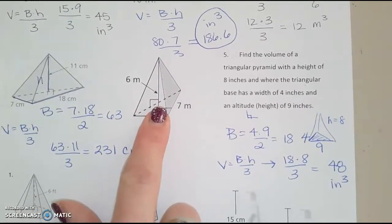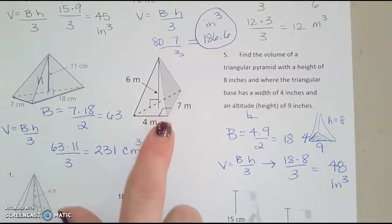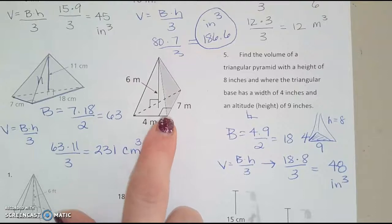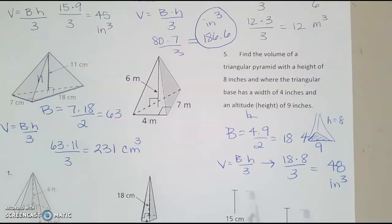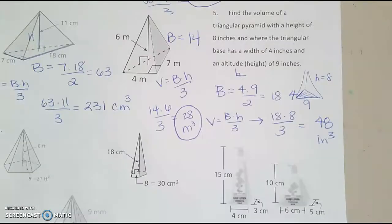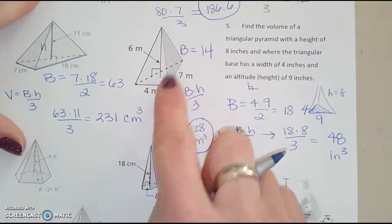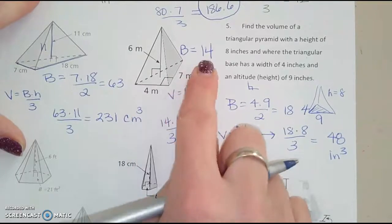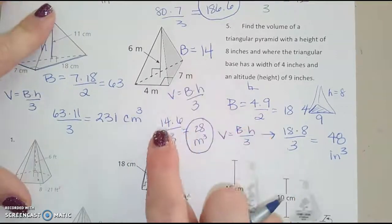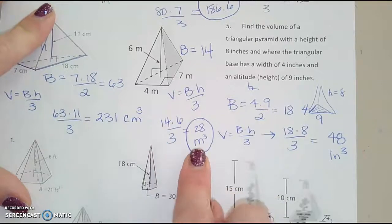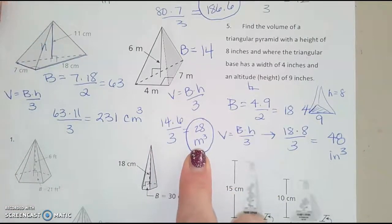So I know it's kind of crammed in here in the middle, but you're going to pause and do this one for practice. And then when you're ready, we'll check this answer. Okay, so I found the area of this triangle. Base times height divided by 2 for a triangle gave me 14. So then 14 times 6 divided by 3, and I got this.